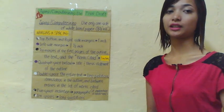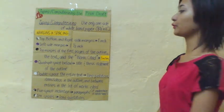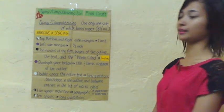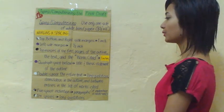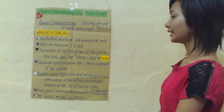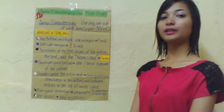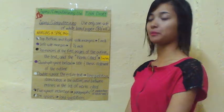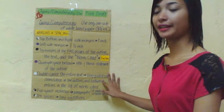Another rule is that the top margins of the first pages of the outline, the text, and the works cited are two inches. Another is the quadruple space below the title and the thesis statement of the outline — this only applies on the first pages, which is the title and the thesis statement. Double space for the entire text.